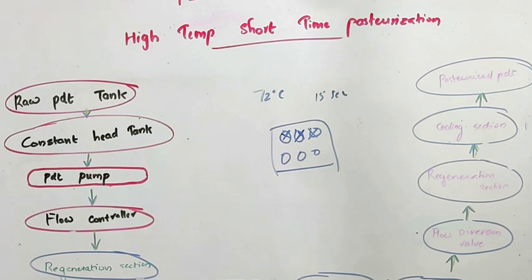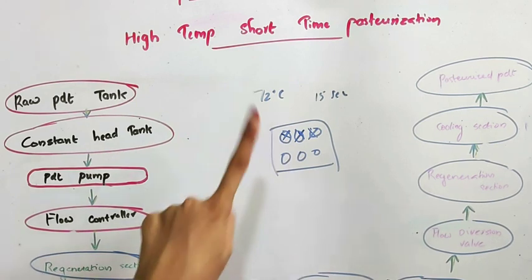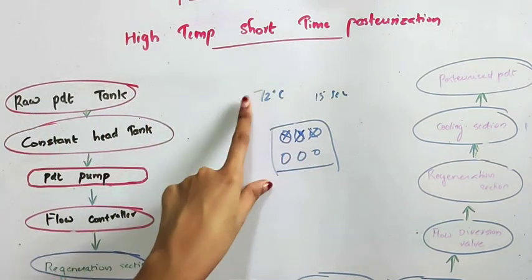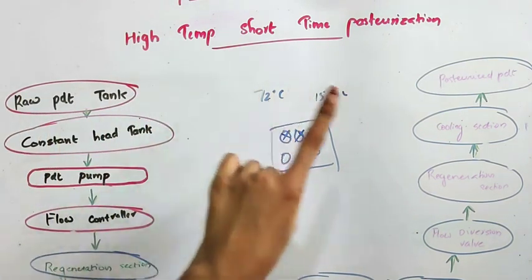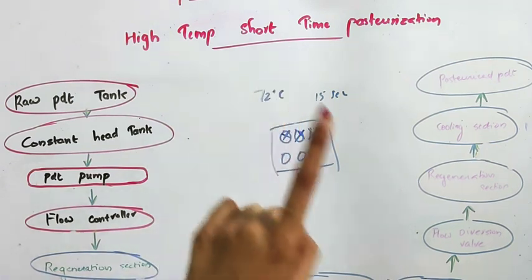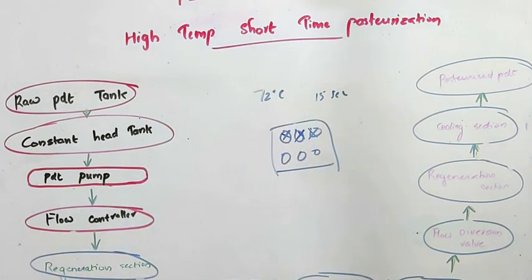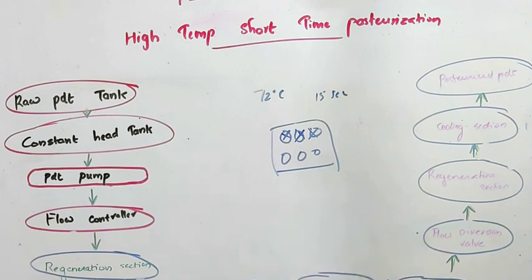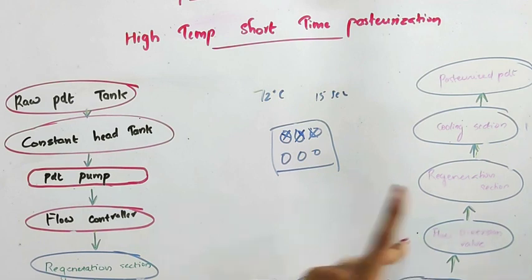From the heating section, the milk reaches the holding tube. In pasteurization, we have to hold the milk at 72 degrees Celsius for a time period of 15 seconds, so this holding tube is used to hold the milk at 72 degrees Celsius for 15 seconds.